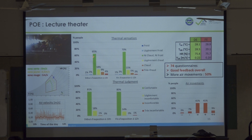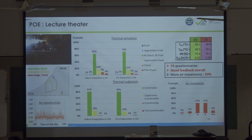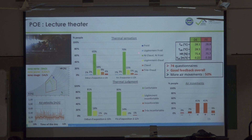Fortunately, the results are positive. For thermal sensation — neutral, slightly warm, warm — at the beginning 60 percent felt neutral, and at the end 70 percent felt neutral plus 15 percent slightly warm. In terms of satisfaction, we need at least 80 percent. So 70 plus 15 equals 85 percent — fortunately above the threshold — though 3 percent felt hot and a few felt very hot.